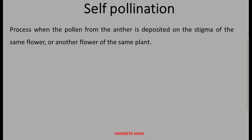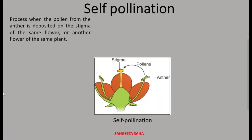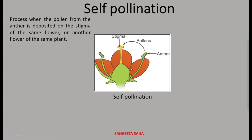That is why it is called 'self' — it means same plant; it has to be the same plant. As you can see here in the diagram showing self-pollination, this is the anther — that is the male part — and this is the stigma. The whole process is occurring within the same plant, so that is why it is said to be self-pollination.